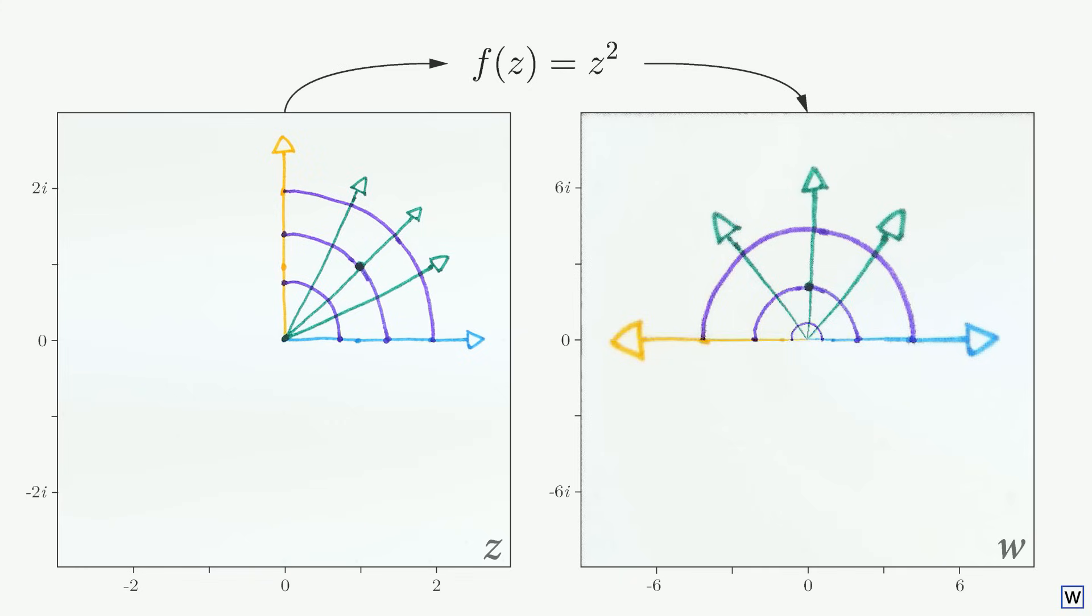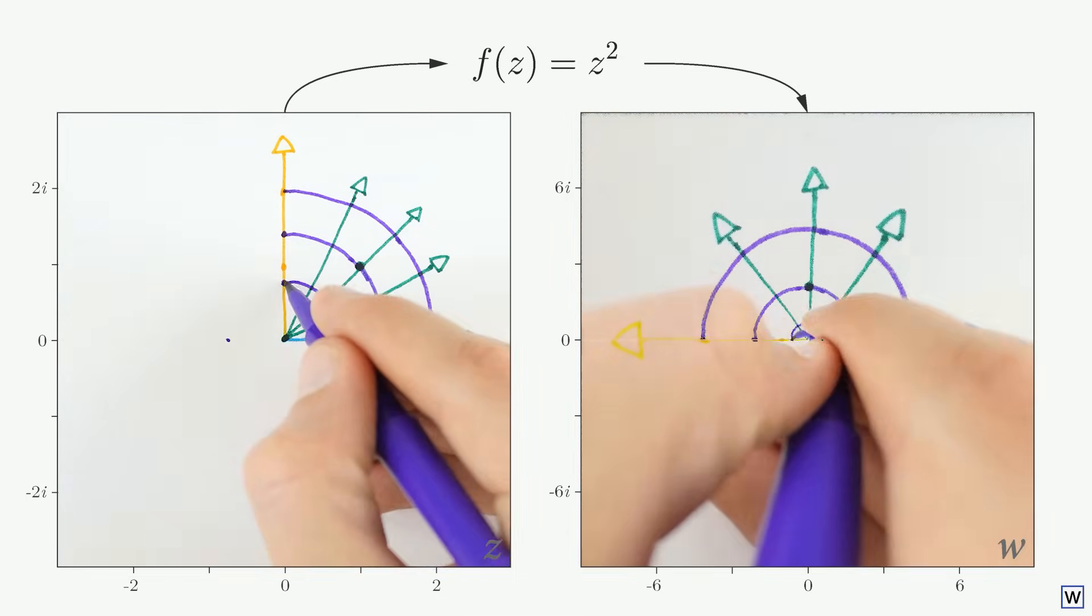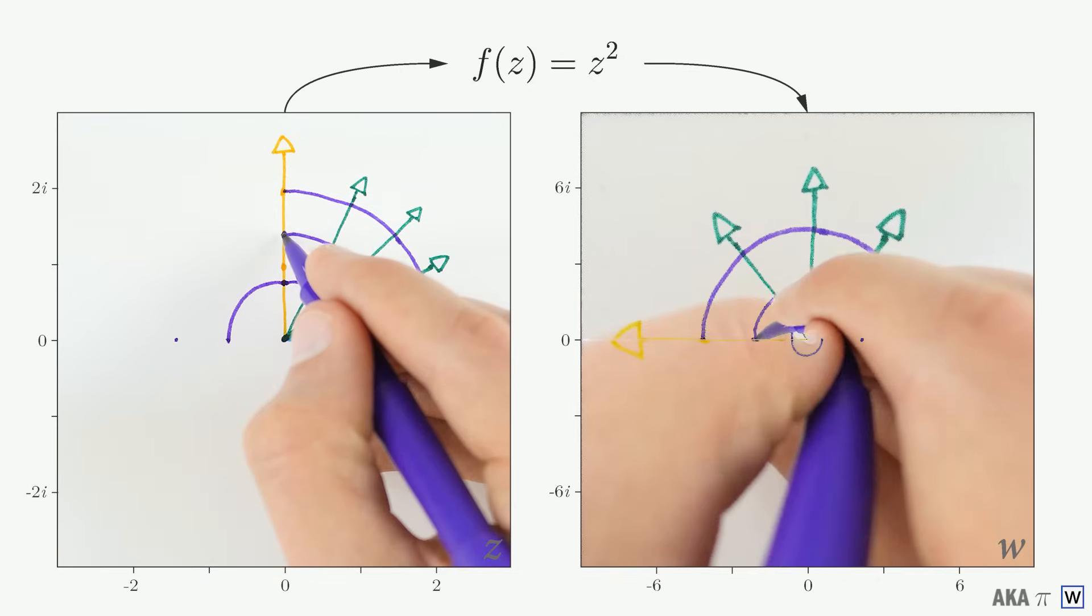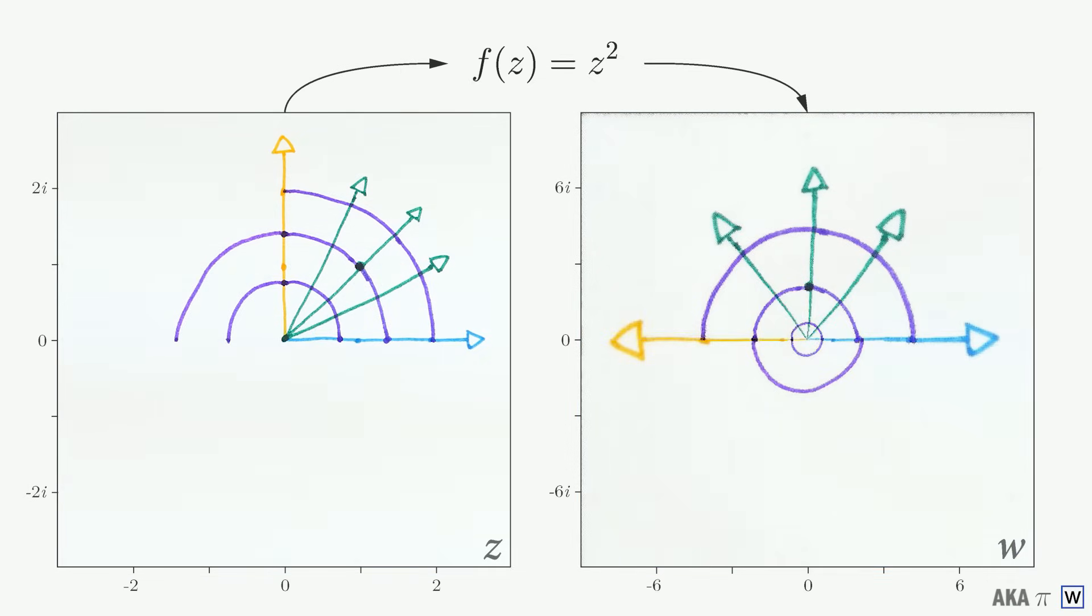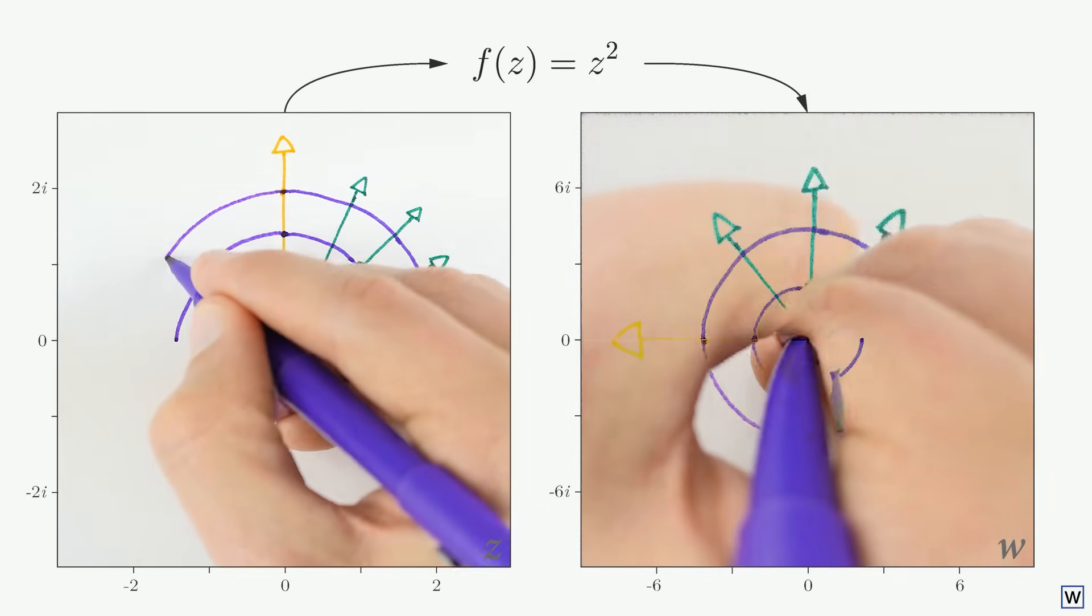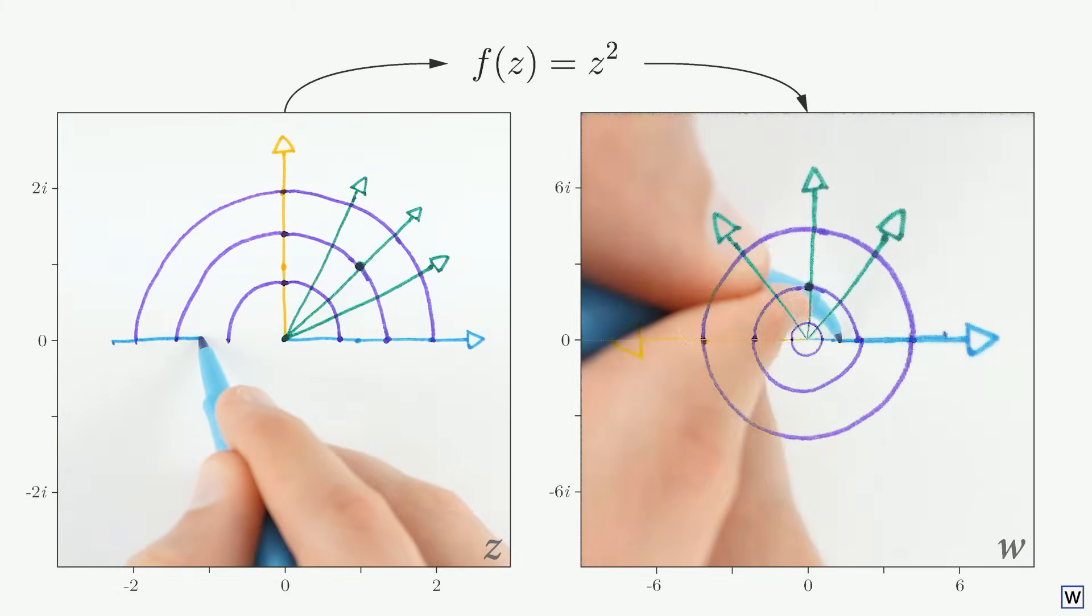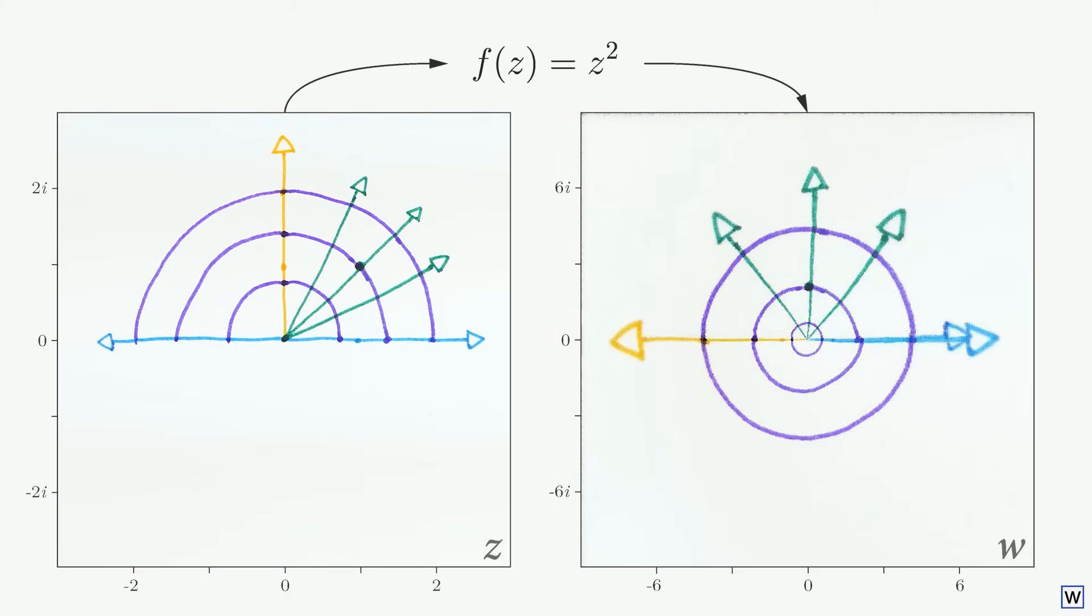For example, we know that our mapping doubles the angle of the input points. This is fine until we use up too much of our input space. If we continue the circles we started earlier, once we arrive at 180 degrees, we begin to see a problem. Our shapes have been expanded to fill up the entire output space, but we've only used half of the input space.